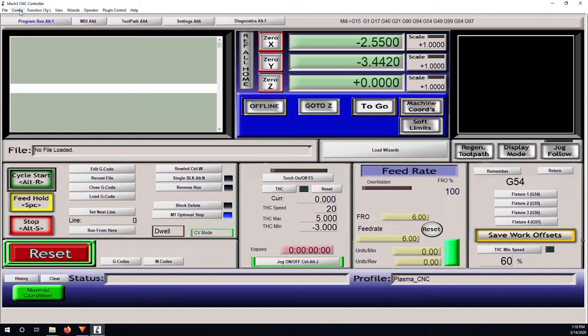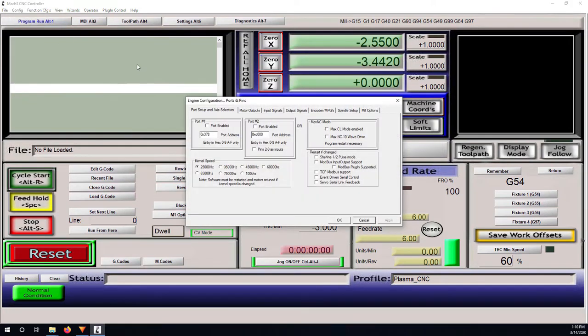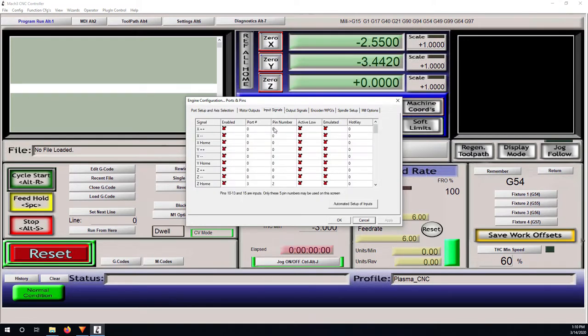Here in Mach3 you just go to port and pins. I'm going to skip directly to the configuration of the limit switch on the floating head setup. Go to input signal and scroll down. You have two options. The first option is to enable the Z home. You just enable this and put in port number 3 and pin number 2, because I connect the limit switch to input number 2 and the other wire to ground.